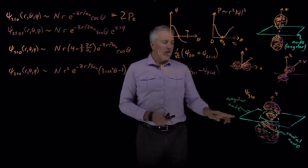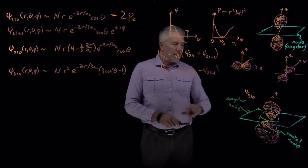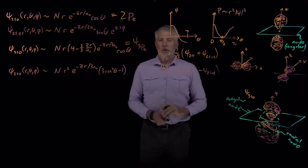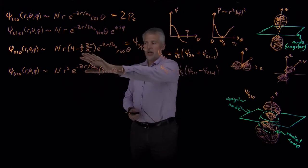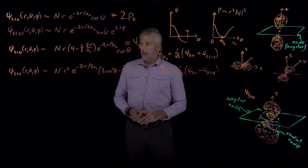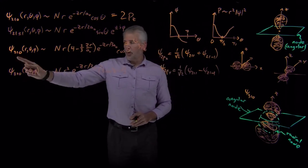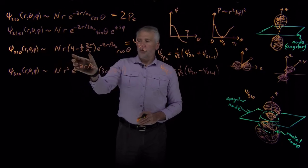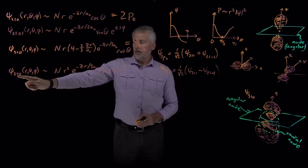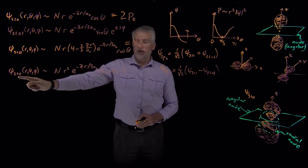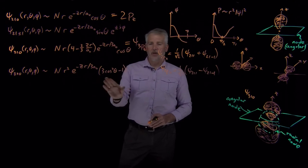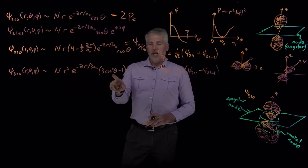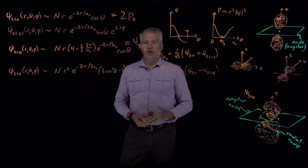We can now distinguish between the angular node and the radial node in this 3pz wave function. The 3pz wave function has both an angular node and a radial node. For one last example, we can ask what happens when l equals 2 instead of 1. Increasing n from 2 to 3 introduced a radial node; increasing l from 1 to 2 is going to introduce an angular node. This happens because the angular behavior becomes the 3 cosine squared theta minus 1 term, which is quadratic and therefore has two places where it equals 0 — two angular nodes instead of just one.